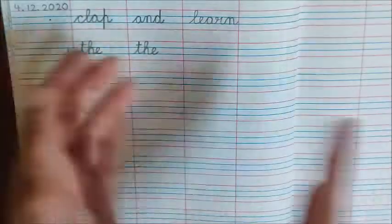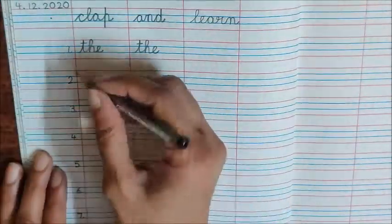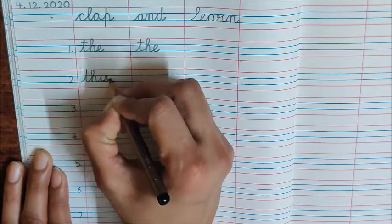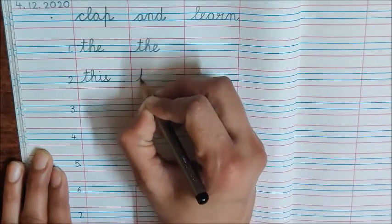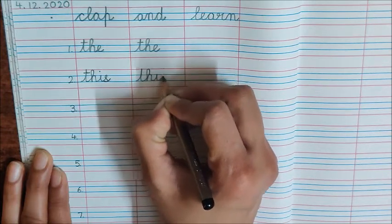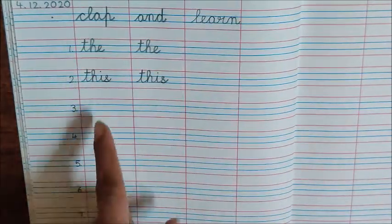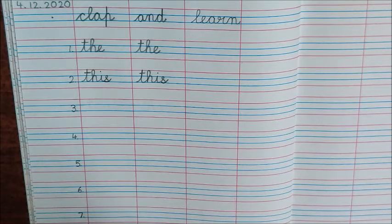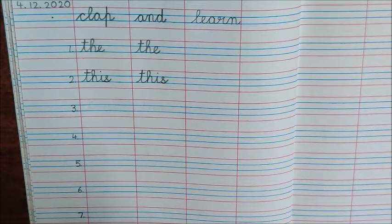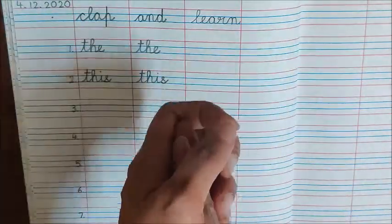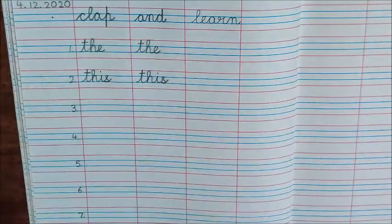T, H, I, S — This. Now write the word This here. You have to write each letter two times. Now the next word is used for things which are far. What is this word? That. What are the letters in the word That? T, H, A, T — That. Write the word.